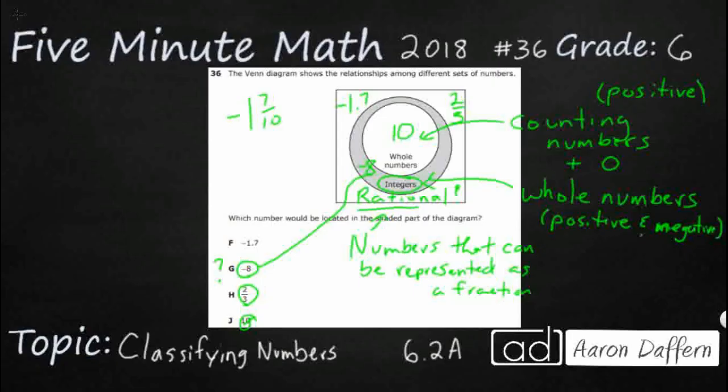If we really want to make it a fraction, we can just make it negative 17 tenths. We can convert our mixed number into an improper fraction. And look, there it is right there. So even decimals can be turned into a fraction.